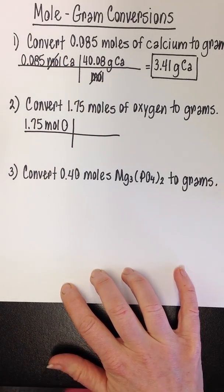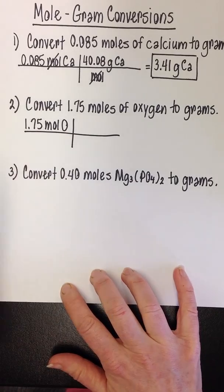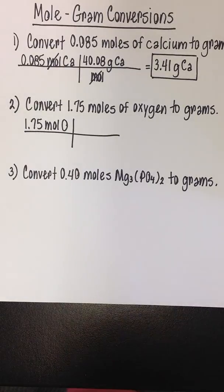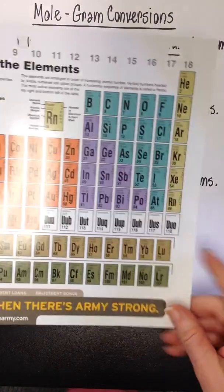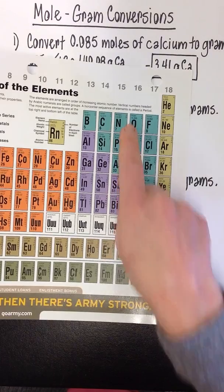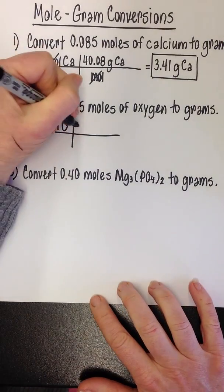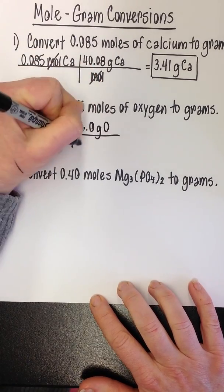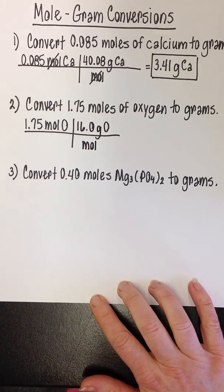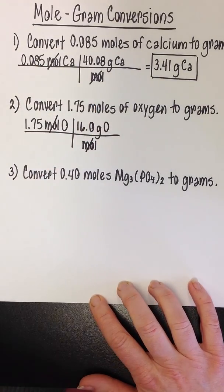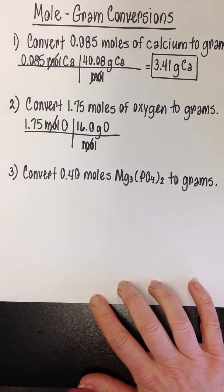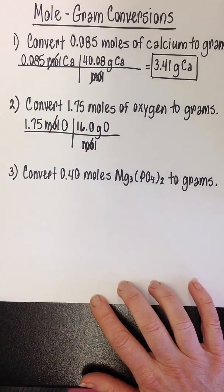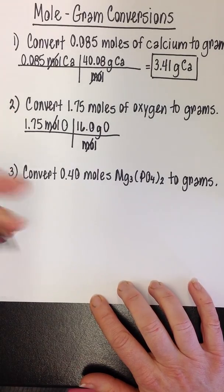You've got to have the molar mass of oxygen in order to do this conversion. So again, we go back to this periodic table, which at this point, for any chemistry student, you've just got to have it with you all the time. Oxygen has a molar mass of 16.0 grams per mole. That's going to go on the top, 16.0 grams of oxygen per mole. Mole is on the bottom because it needs to cancel with what's on the top.